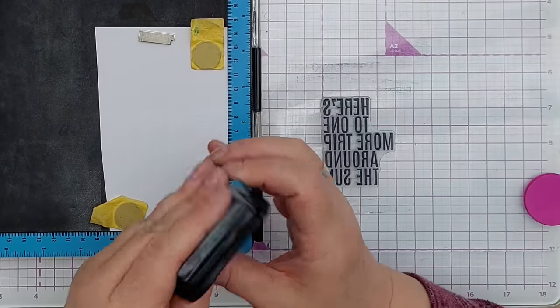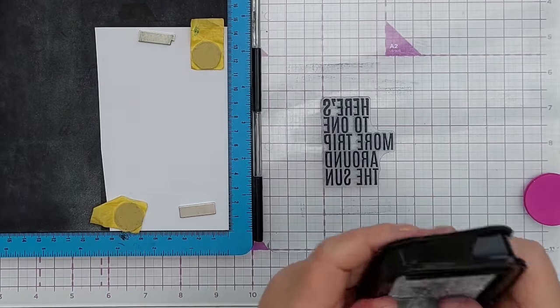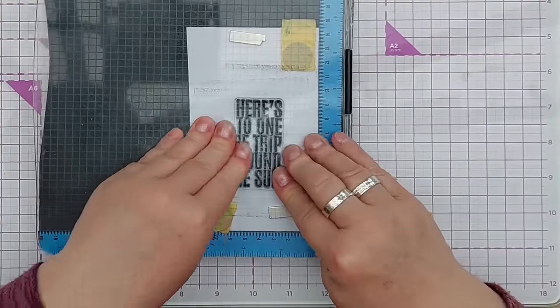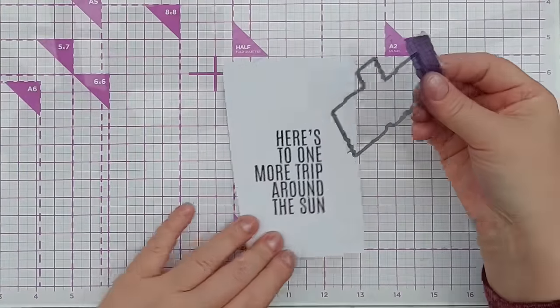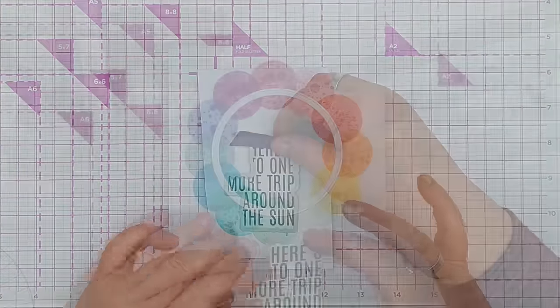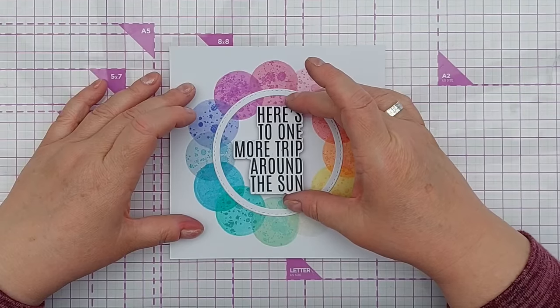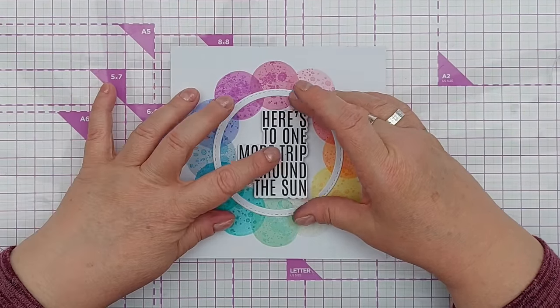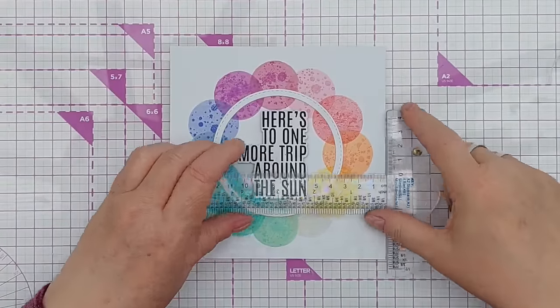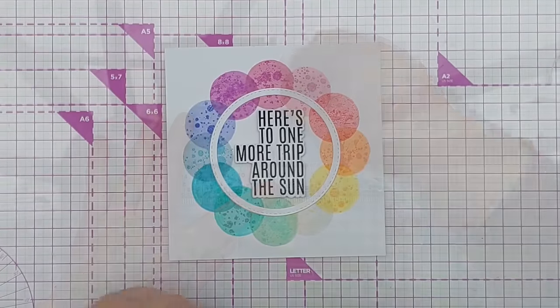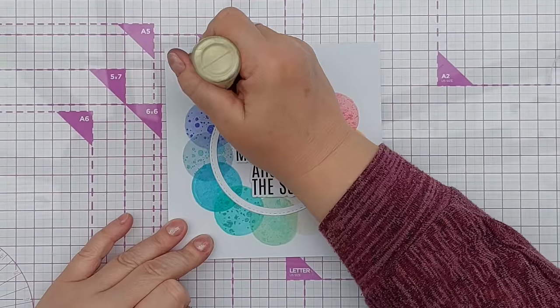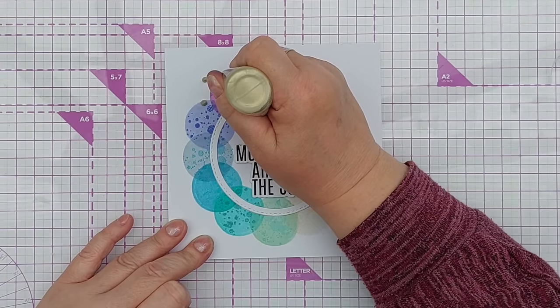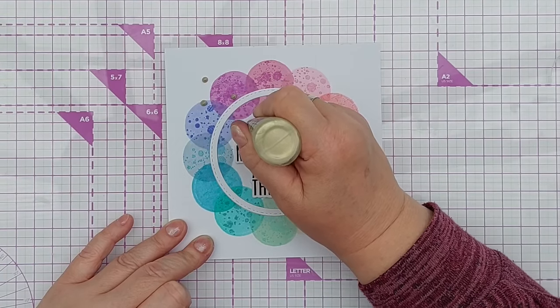So I'm stamping the sentiment in black ink because I think black ink will stand out really well amongst all that color and I'll die cut it using this die. I've got my stamped and die cut sentiment here, I'm going to pop it roughly in the middle. I do want to get it straight though. And now for some gold nuvo drops, I'm going to add them in a diagonal across the front of the card.